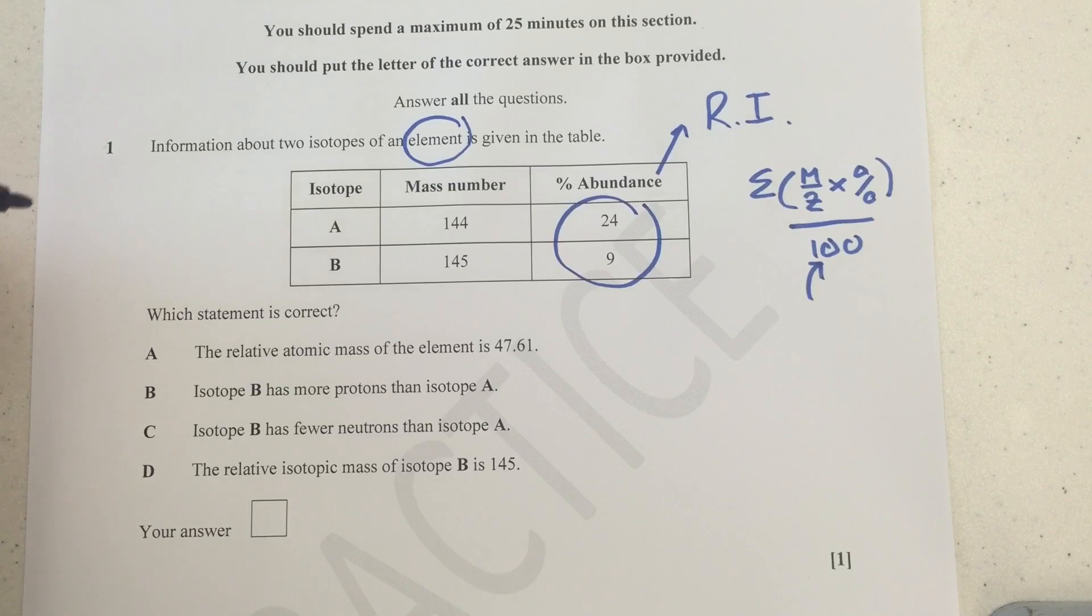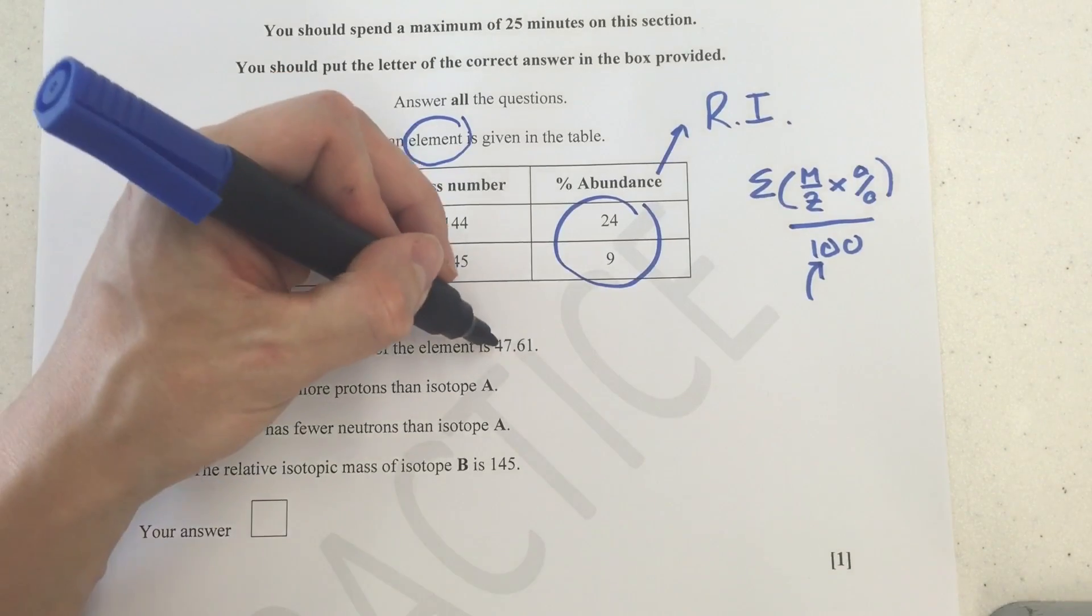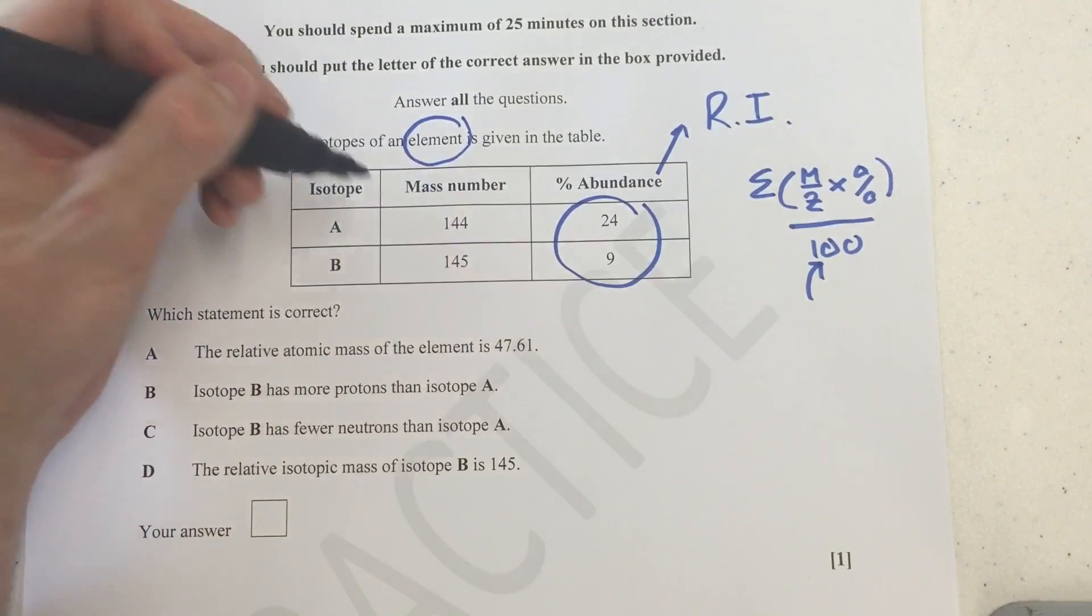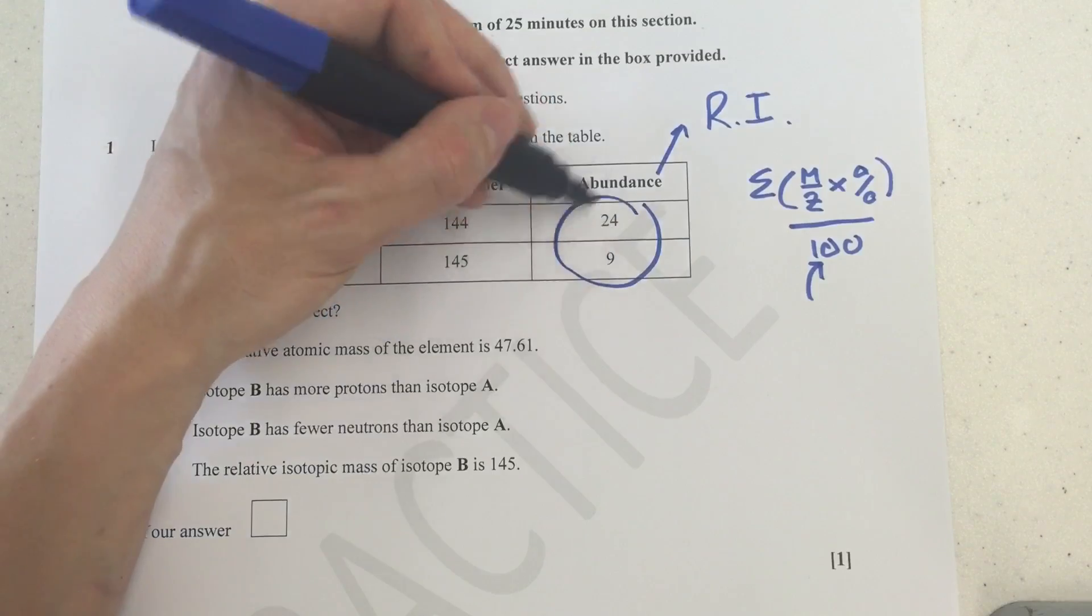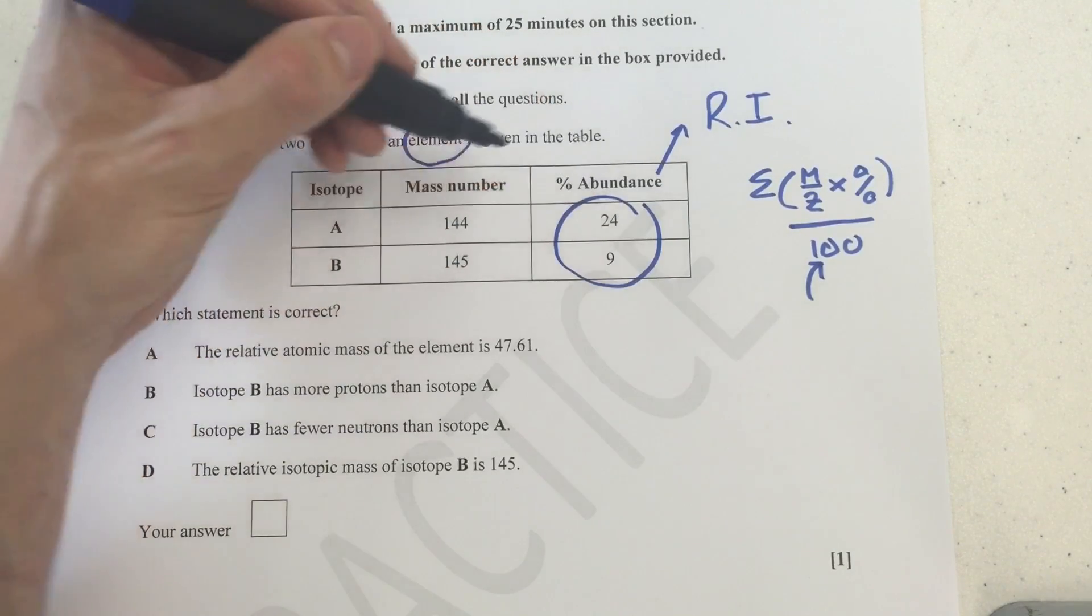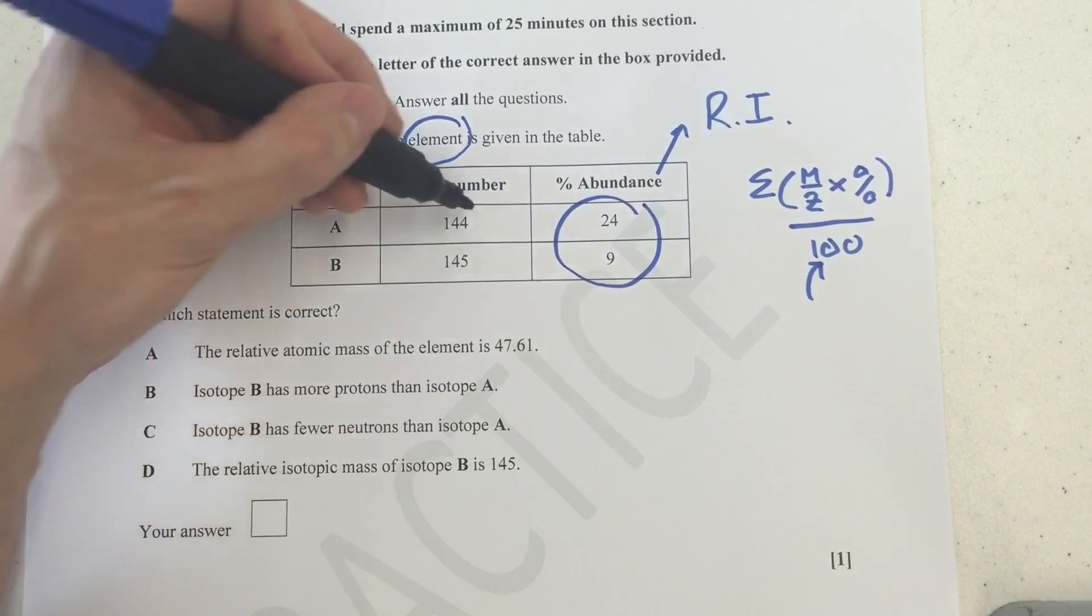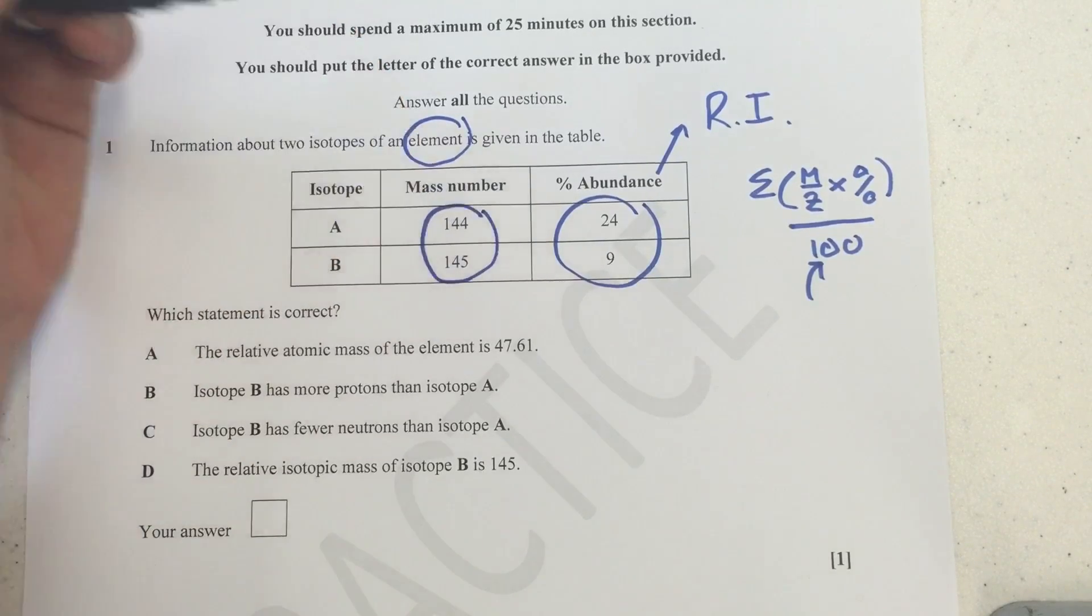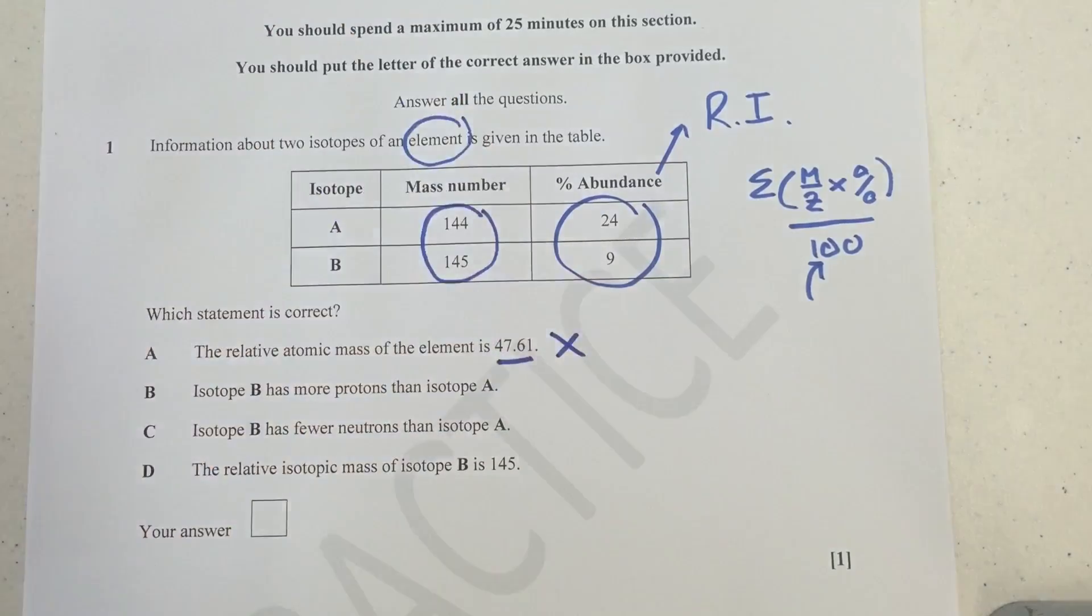What I do want to go through is which is the correct answer by eliminating the others. Here it says the relative atomic mass of the element is 47.61. You've got nowhere near enough information unless there are other isotopes, or this is meant to equal a weird percentage. Also, remember, the actual atomic mass of the element should be an average of these two numbers in some way, and this is obviously miles away from that. So it can't be that.